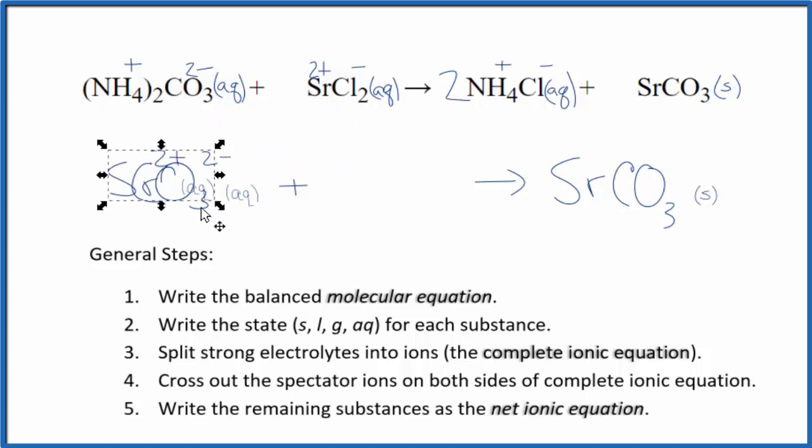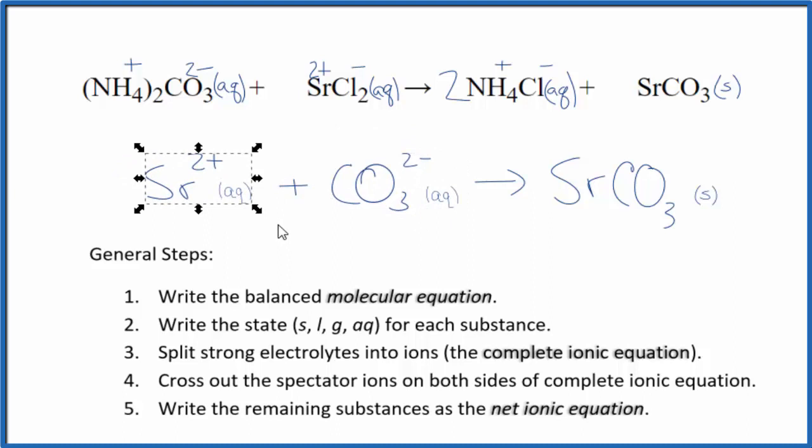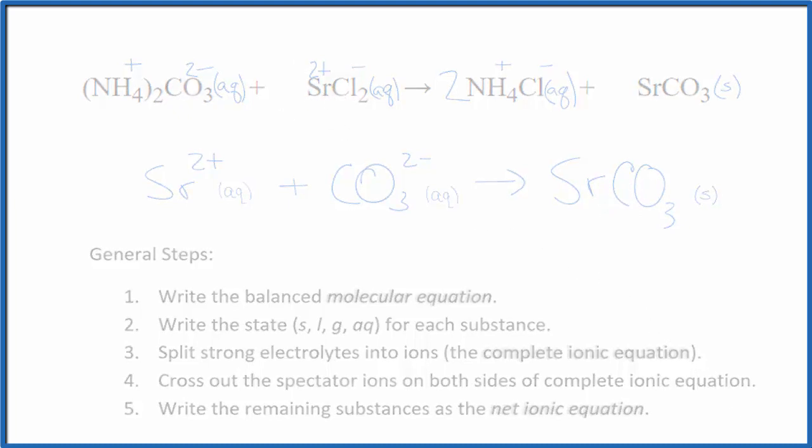Sometimes we'll see the positive put first, positive ion first. Doesn't really matter. It's the same equation. Maybe it looks a little nicer. And that's it. This is the net ionic equation for ammonium carbonate plus strontium chloride. And this is Dr. B. Thanks for watching.